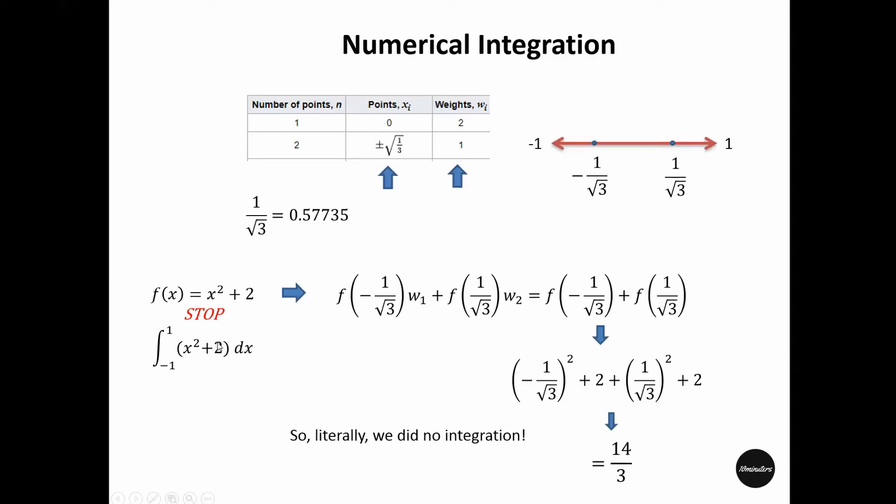So instead of integration, we will evaluate this function at this point and then multiply that with the weight and then add with that this function evaluated at that point and again multiplied with the weight. According to Gaussian quadrature, these two weights are 1.